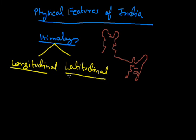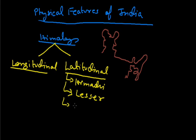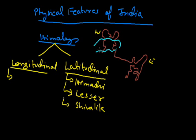In the longitudinal divisions of Himalayas, we again divide Himalayas into Himadri, then the Lesser Himalaya, and the third one is the Shivalik. Now let us understand the Himalaya by dividing it longitudinally — that is, from west to east. The first division of Himalaya is in between the river Indus and river Sutlej.